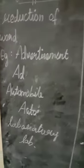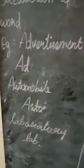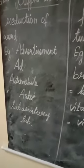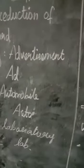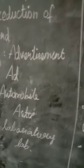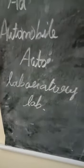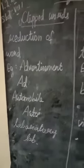For example, 'advertisement' — the short form is 'ad.' Next, 'laboratory' — the short form is 'lab.' So in this case, a full-form word becomes a short-form, reduced-form — clipped word.